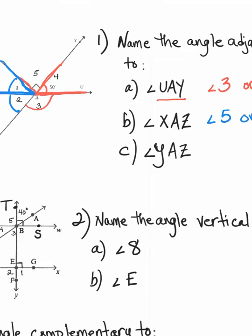The last one is angle YAZ, which is angle number five. Again, there are two angles adjacent to angle five. That would be angle one, because it shares side AZ, or angle four, because it shares side AU. So those are adjacent angles — adjacent just means next to, so they touch.